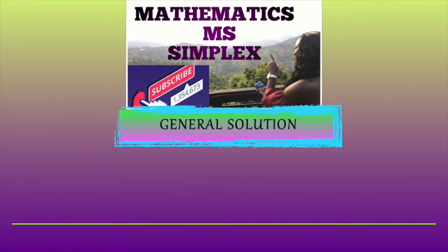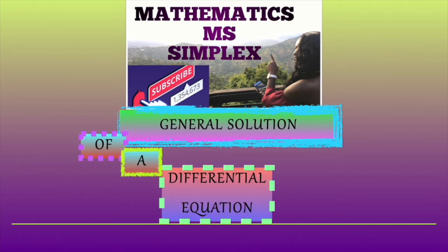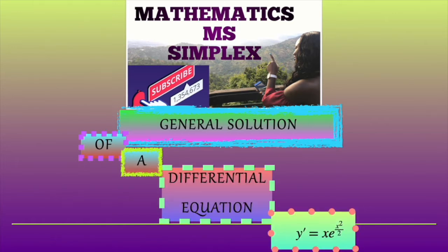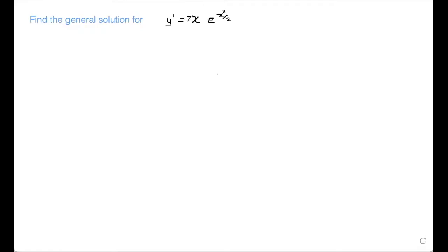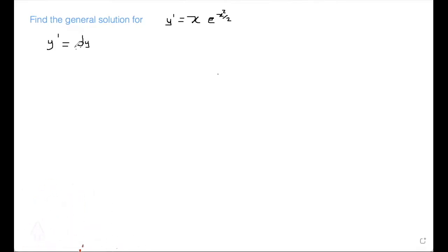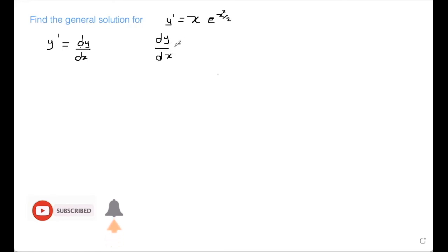Welcome back guys. Today I'll be finding the general solution of a differential equation. The differential equation is y prime equal x e to the x square all over 2. So we're going to find the general solution for this equation. y prime is the same thing as dy dx, so we're differentiating y with respect to x. I'm going to change y prime to dy dx, so it's dy over dx is equal to x e to the x square all over 2.